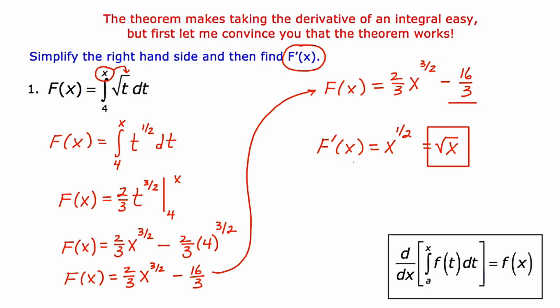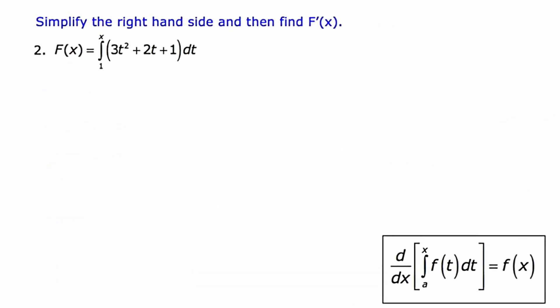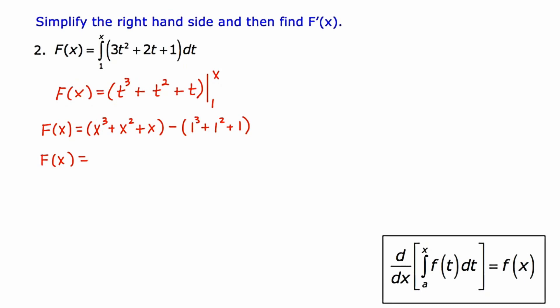Let's take a look at another example. On this next slide, I'm going to work only on the right-hand side, and once I get a suitable expression, I'll take the derivative. I'm going to take the anti-derivative of this trinomial by raising the power and multiplying by the reciprocal for each term, ending up with t cubed plus t squared plus t. Substituting in x for all occurrences of t, and then 1 for all occurrences of t, and subtracting: 1 cubed plus 1 squared plus 1 is just 3. So my final function is x cubed plus x squared plus x minus 3.